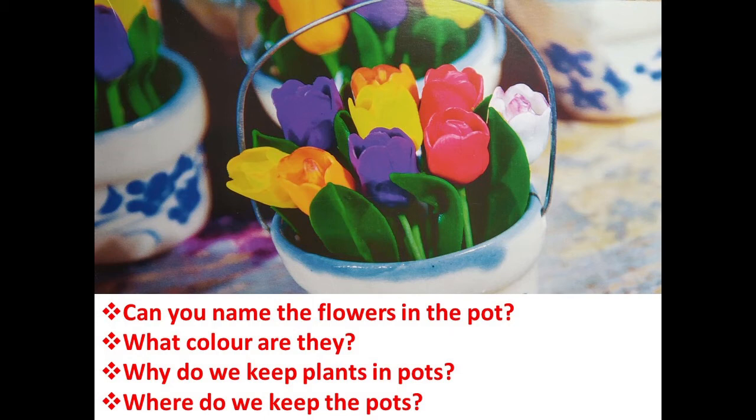Why do we keep plants in a pot? We keep plants in a pot because if you keep these flowers outside like that, they are not going to stay for long. But in a pot, if you keep some water and then keep the plants or these lovely flowers, they are going to last longer. They will not dry, they will not wilt, they will not die. So that is why we keep plants in a pot — so we can keep some water and then keep the plant in the pot.